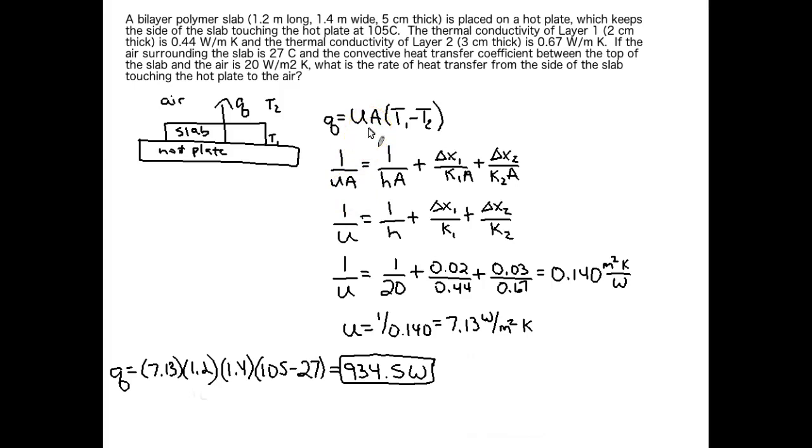This equation works very well for slabs, but it does not work so well for cylinders. The Q over UA equation will work fine as long as you have the right area matched up to your overall heat transfer coefficient, but this 1 over UA equation needs to change to account for the different radii in your cylinder. We'll look at that in a different video. Just keep in mind that what you saw in this video is for slabs only. Don't try to use it with cylinders.